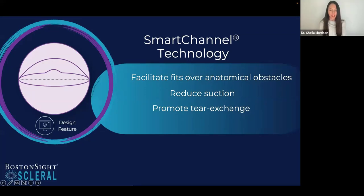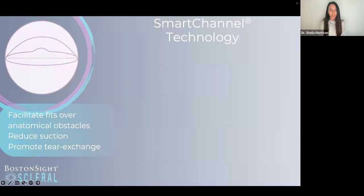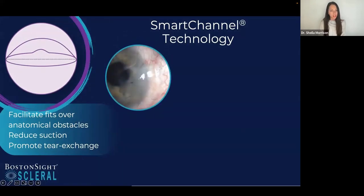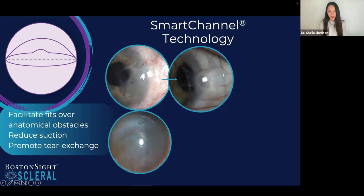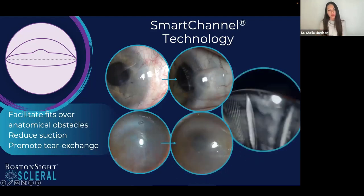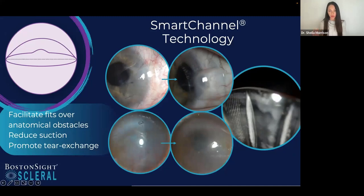Smart channel technology is used to fit over anatomical obstacles like lumps and bumps on the ocular surface. Smart channels are also very useful for reducing lens suction and promoting tear exchange. There is a wide range of channels available, and you can customize their location and size depending on what you're trying to vault. For example, a channel used purely for tear exchange would differ from one used to vault over a pinguecula. You can use one to four channels per lens.